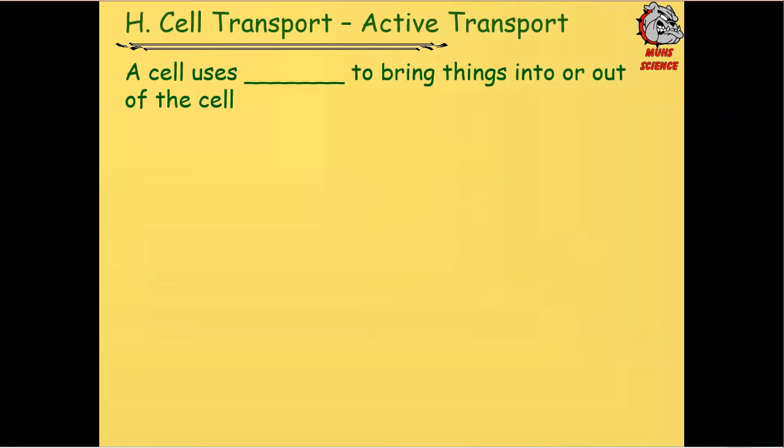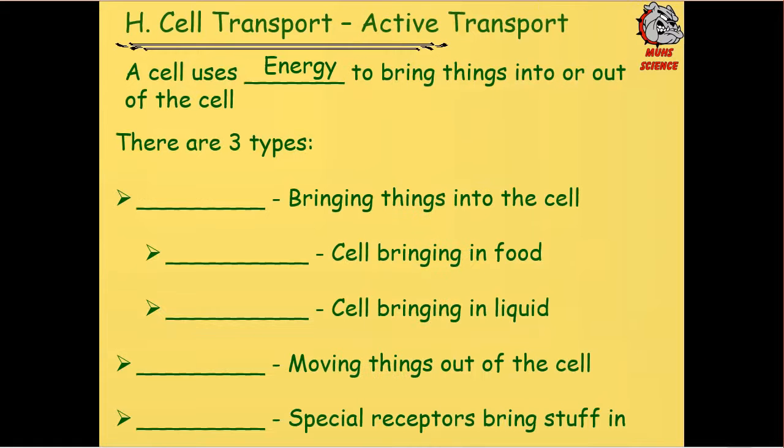So our next thing here is active transport. Active transport, a cell uses energy to bring things into or out of the cell. So these things don't naturally happen. What we need to do is we need to supply energy to the cell. There's three types, or three basic types at least, of active transport.